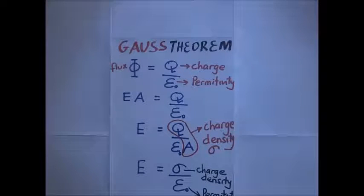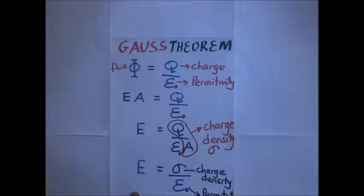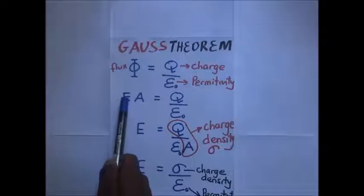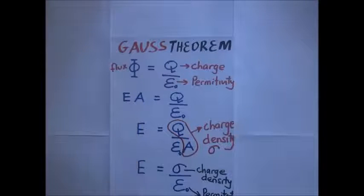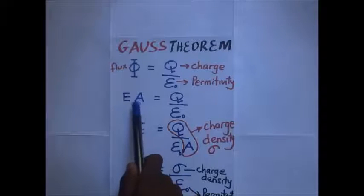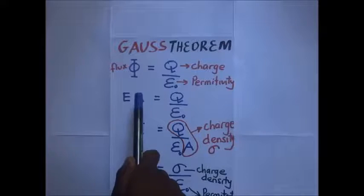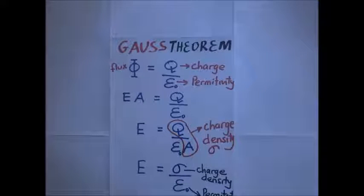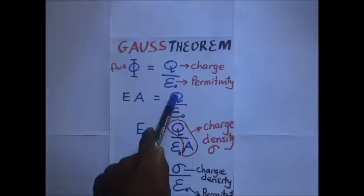We can express Gauss's theorem in terms of surface charge density. We know that flux is equivalent to the intensity of the field multiplied by the area through which the field is going — this area has to be normal to the field. If the area is not normal to the field, we resolve the field to the perpendicular line going through the area. So flux is the intensity times the area, and that equals the charge divided by the permittivity.